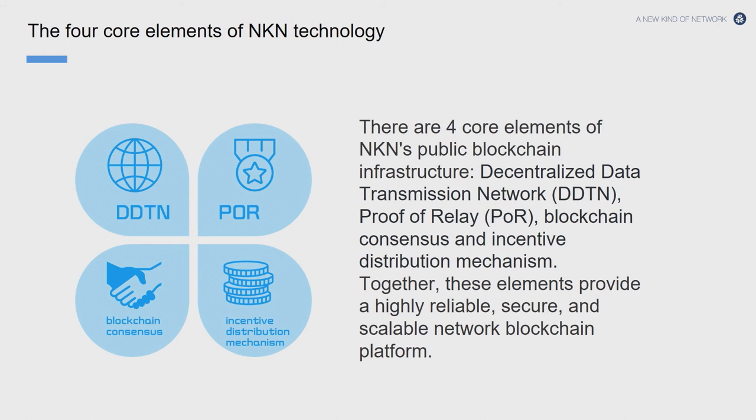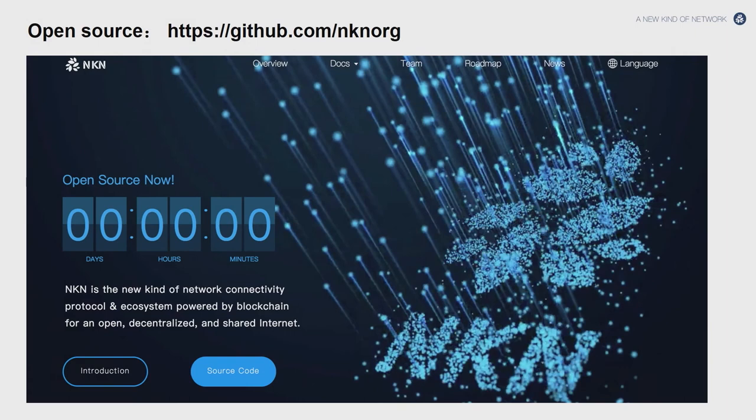There are four core elements we want to figure out. One is how to distribute the decentralization transmission network, and a lot is POR — we call it useful proof of relay work, which is the hardest problem. We also try to introduce the incentive distribution to the network layer. We want to announce that we already open sourced all the implementation. If some developer has interest, you can visit our website to see how we do this work and what we've already implemented.